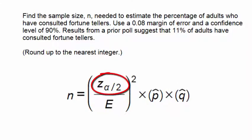z subscript alpha divided by 2 is the critical value, and is dependent on the level of confidence, which in this case is 90 percent.